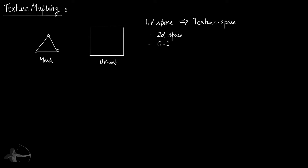Every vertex of the mesh is given a place in this UV space, which is defined as a UV or texture coordinate of that vertex. For example, for this vertex I assign a place or coordinate in this UV space. Similarly, I will assign a coordinate or location for all the vertices in this UV space.